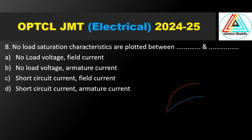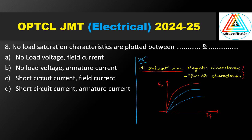Question number 8. No-load saturation characteristics are plotted between — options: no-load voltage and field current, no-load voltage and armature current, short circuit current and field current, short circuit current and armature current. No-load saturation characteristics is also known as magnetic characteristics or open circuit characteristics. It is plotted between no-load voltage E0 and field current IF. Option A is correct.